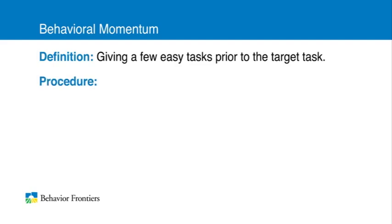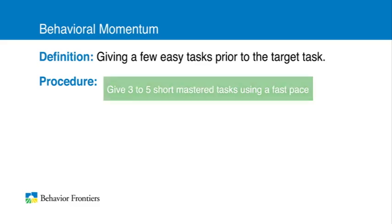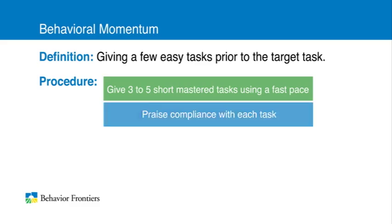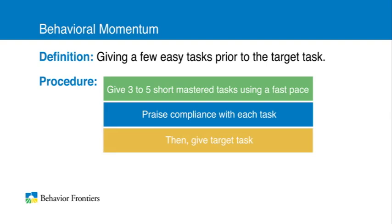The procedure for behavioral momentum is quite simple. Begin by giving three to five short, mastered tasks to your student using a fast pace. Make sure to praise your student's compliance with each task, then give your student the target task.